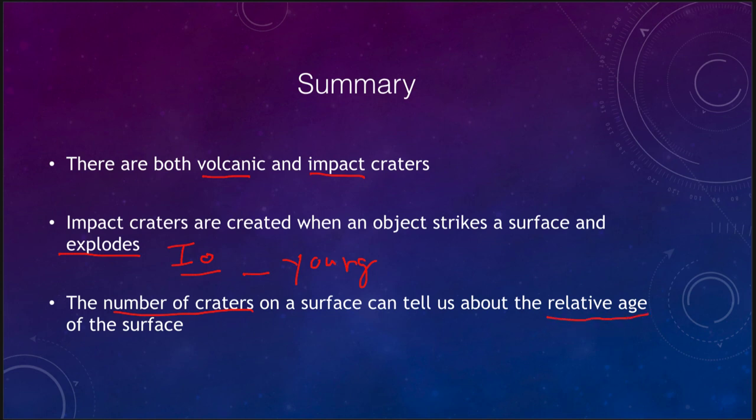The number of impact craters on a surface tells us about the relative age — the more craters we see, the older the surface; the fewer craters we see, the younger the surface. That concludes our lecture on impact cratering. We'll be back again next time for another topic in astronomy, so until then have a great day everyone and I will see you in class!